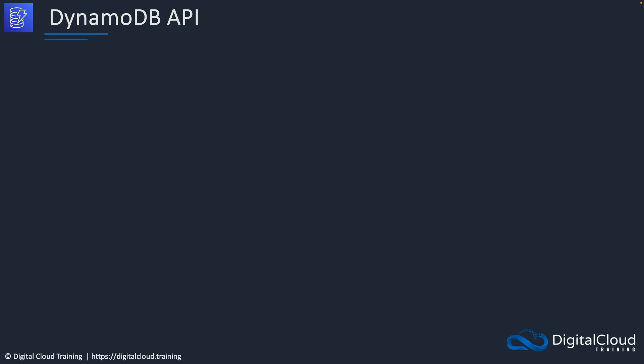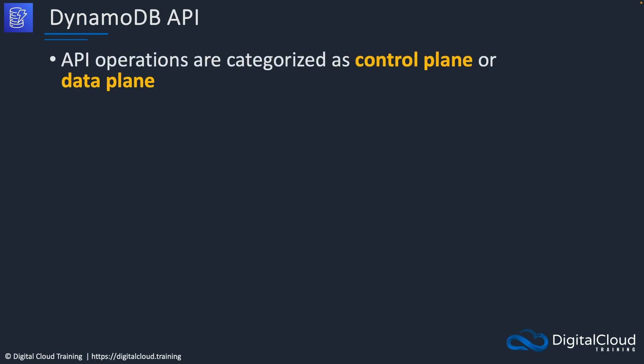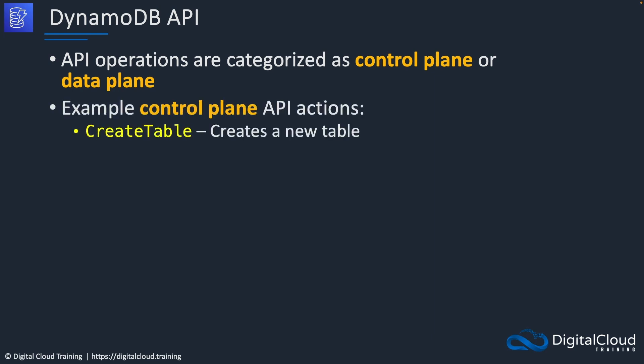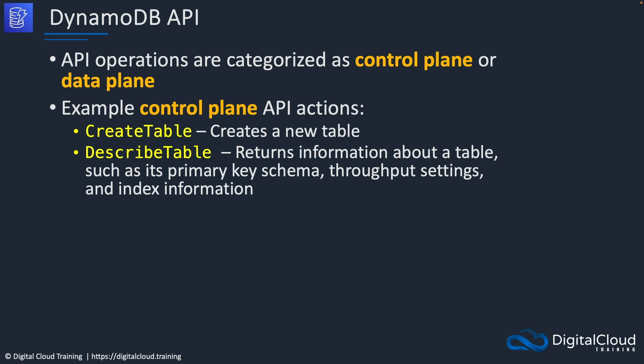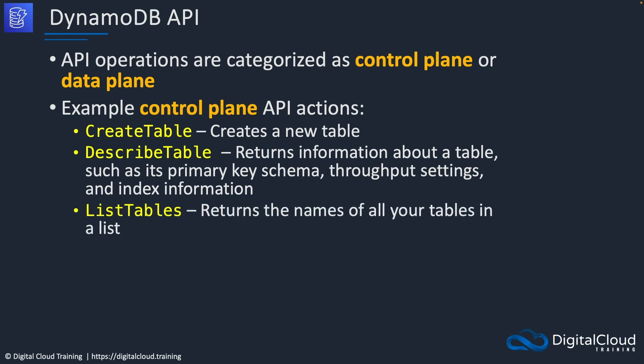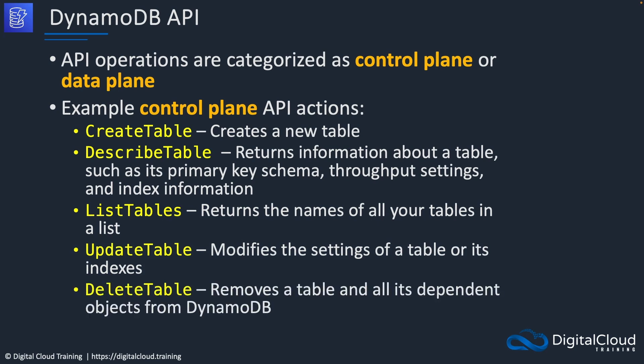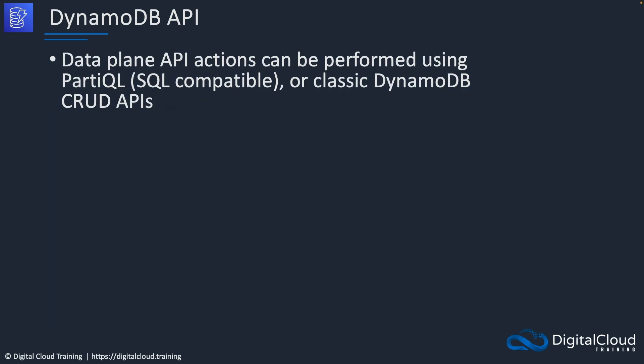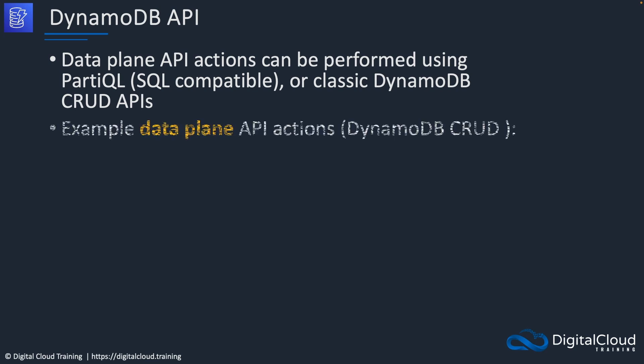DynamoDB is an API-driven service, so everything can be performed through the API. API operations are categorized as control plane or data plane operations. Examples of control plane actions include creating a table, describing a table, listing all tables, updating tables, and deleting tables. Data plane API actions can be performed using PartiQL or classic DynamoDB create, read, update, delete CRUD APIs.